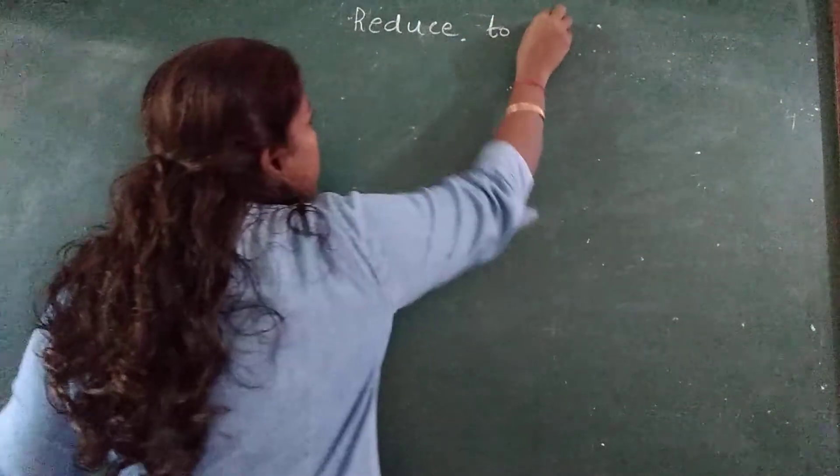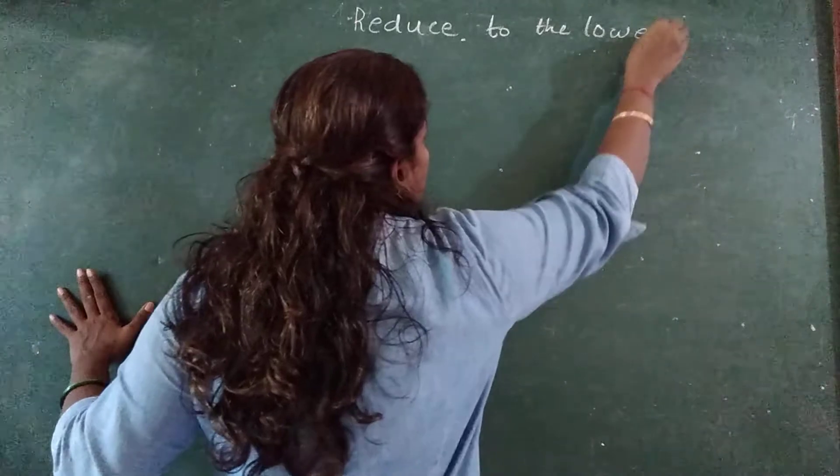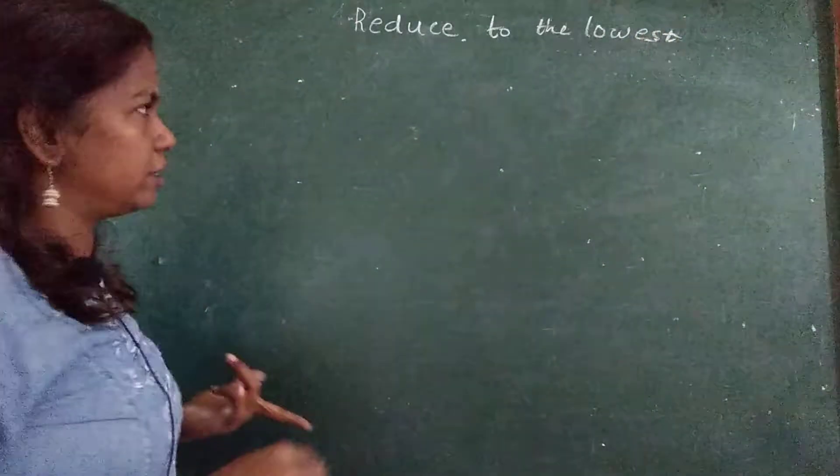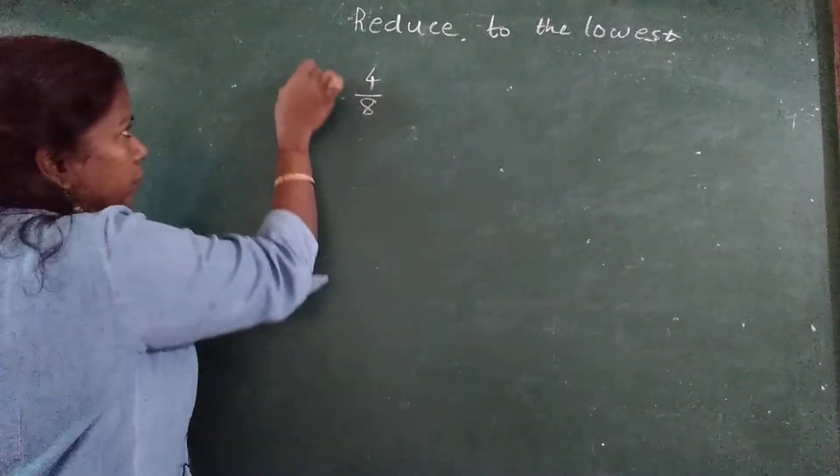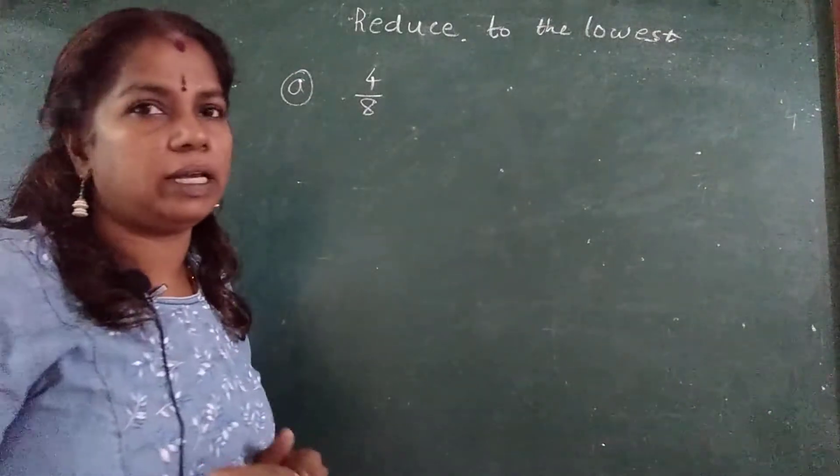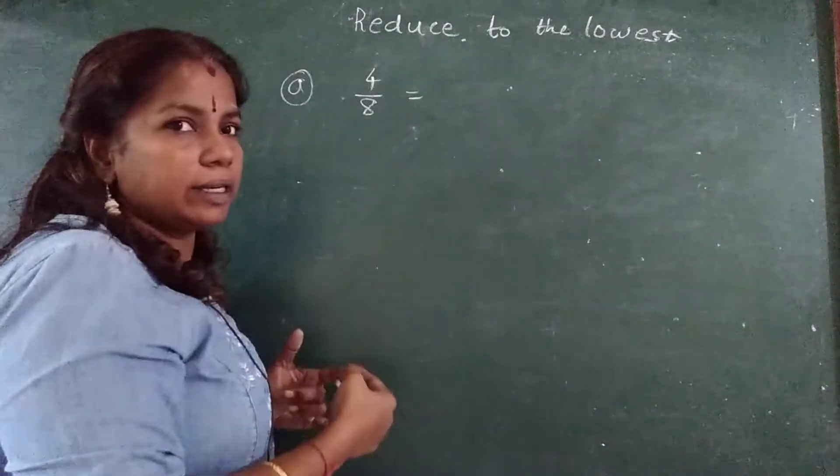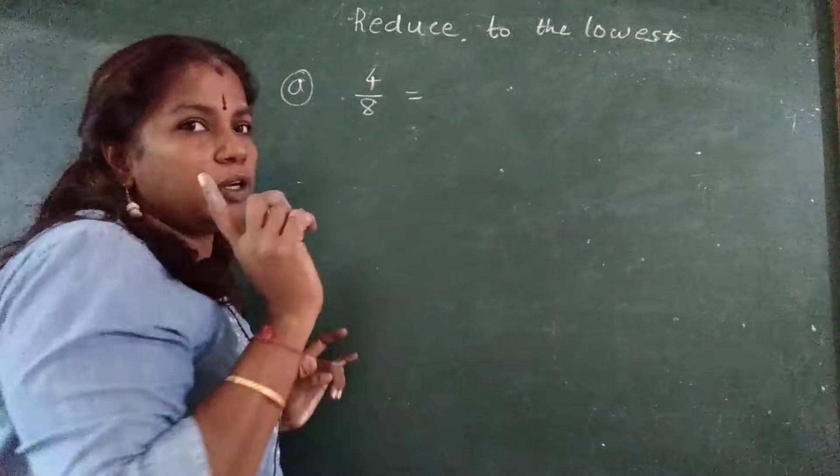Reduce to the lowest. Reduce to the lowest number. Simple example, let me start with 4 upon 8. Now 4 upon 8, what is 4 upon 8? How I will write that table? This 4 upon 8 it will go in table of 2.